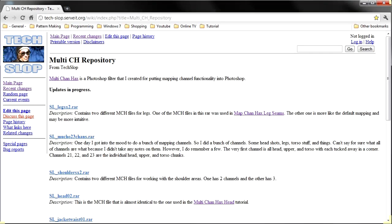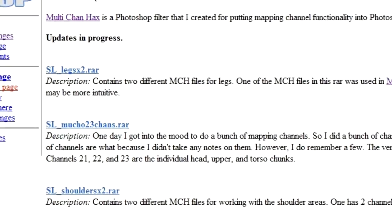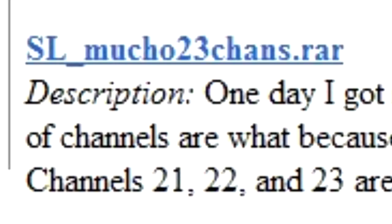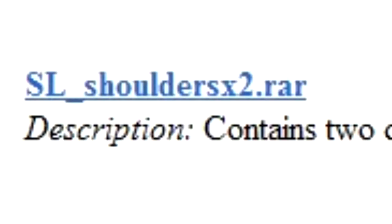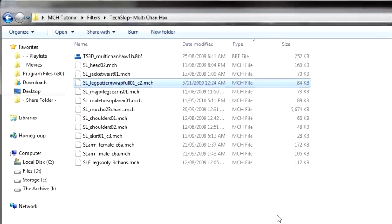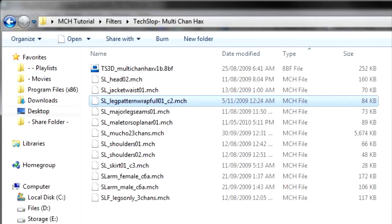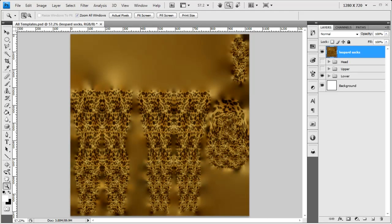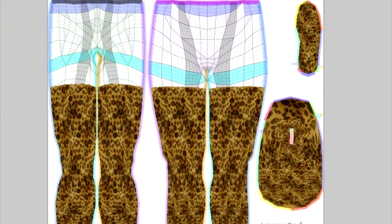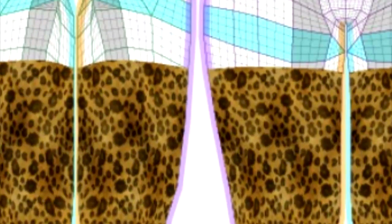There is a repository of different files to choose from. Some files, such as Mucho 2.3, are overwhelmingly packed with different UV layouts. Others just address specific areas of the template. For the bulk of this walkthrough, I'll stick with one of the simplest files, which is Leg Pattern Wrap Full. You'll also need to grab the Solidify filter from Flaming Pear. This filter turns an image layer entirely opaque, and it's especially useful when using Multi-Chan Hacks because the side effect of the filter is zero padding on the bleed area.